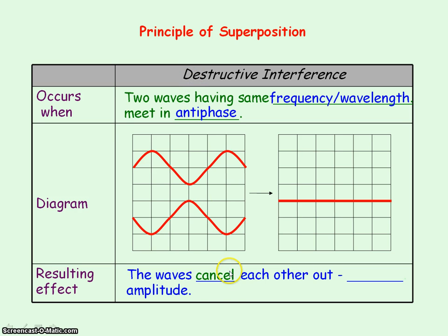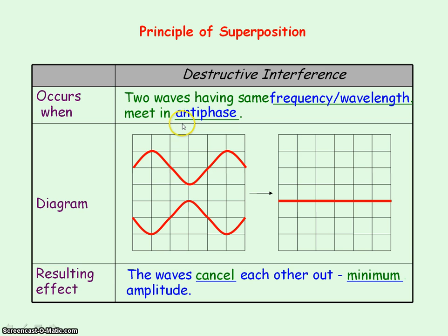You get minimum amplitude. In this case we're getting zero amplitude and zero resultant because the original two waves have the same amplitude. But you can get destructive interference with waves having different amplitudes, as long as they're meeting in antiphase.